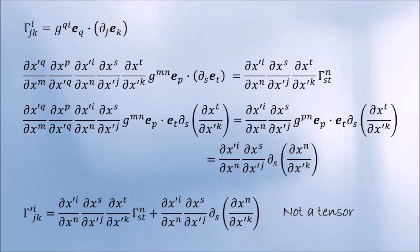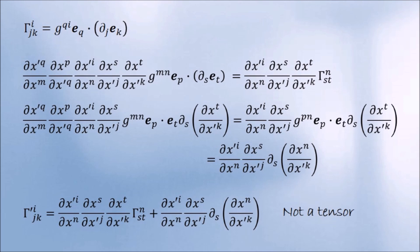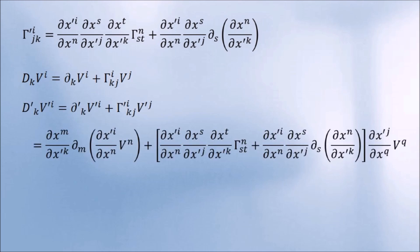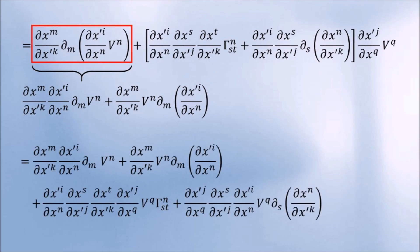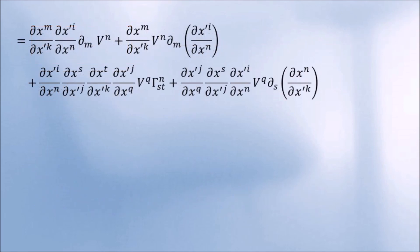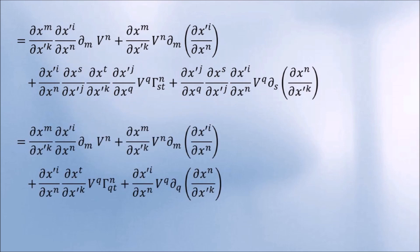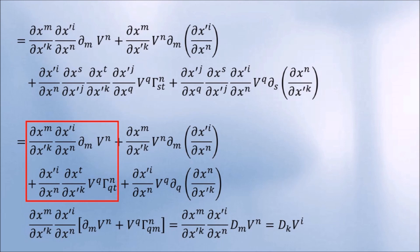So how can the covariant derivative be a tensor? After all, it does have the Christoffel symbol in it. Let's carry out the transformation and see what happens. We can expand the first term to get this. The summation over j makes these two terms into a Kronecker delta. And same goes for these two. These two terms give us the correct transformation. But what about these two? They actually add up to zero.